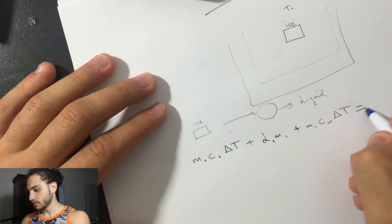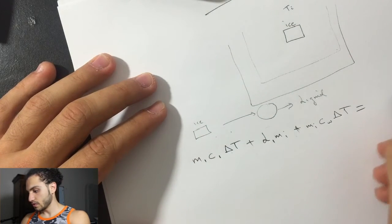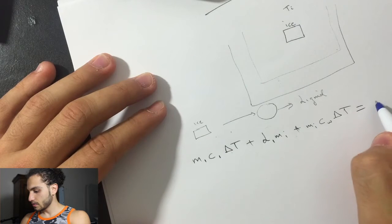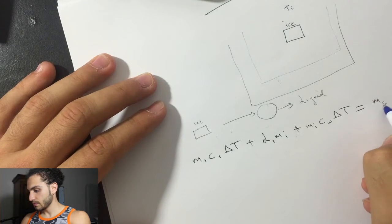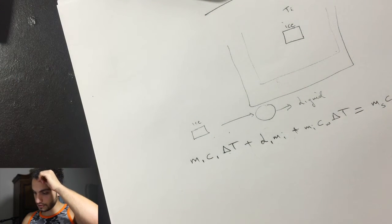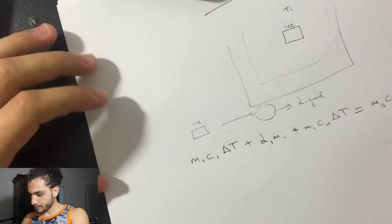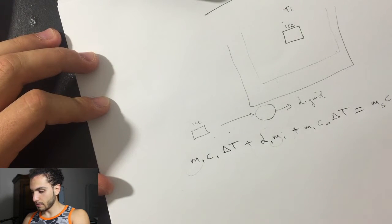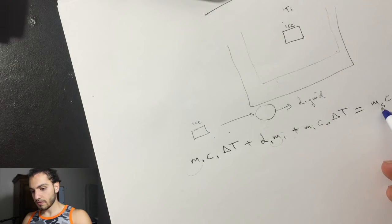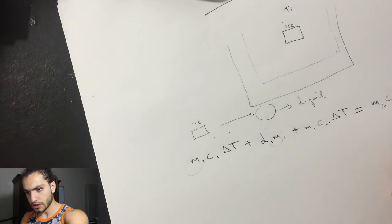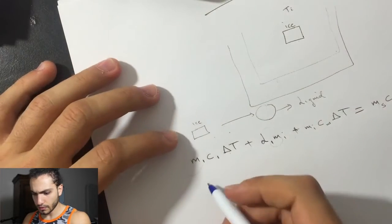This is going to equal to the heat of the silver. So, mass of the silver, specific heat of the silver, times delta T. Okay. So, they gave us the masses of the water, and they gave us the mass of the silver. They gave us specific heat of the silver, and they gave us the temperature of the initial one. Okay, but we'll just go through it really quick.